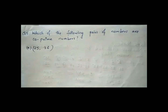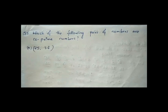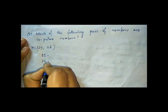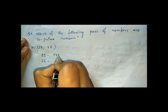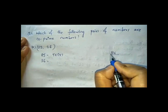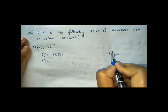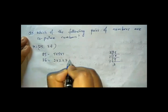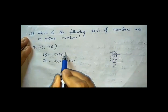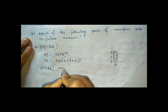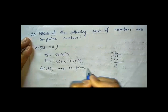Now let us see question 5: which of the following pairs of numbers are co-prime numbers? We will write the prime factors of both 25 and 36. The prime factors of 25 are 5 × 5. Using the prime factorization division method for 36, we get its prime factors. Here only 1 is common between 25 and 36, so 25 and 36 are co-prime numbers.